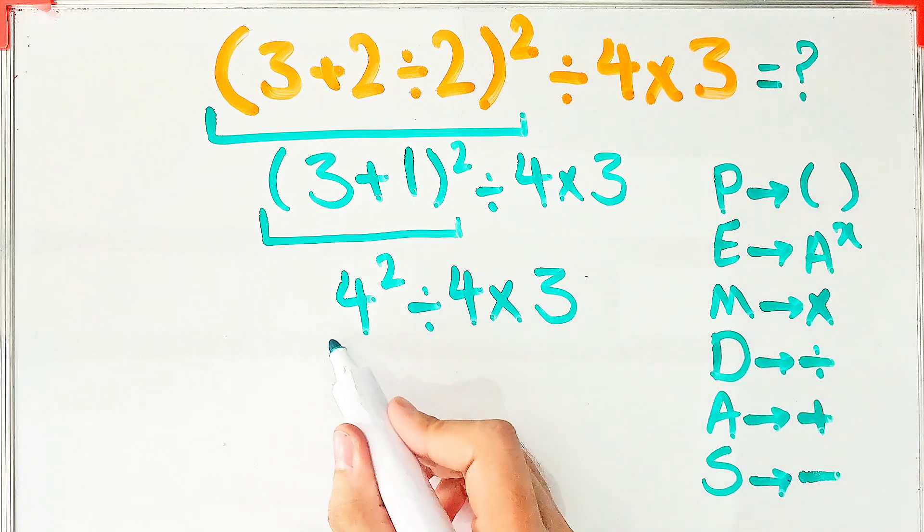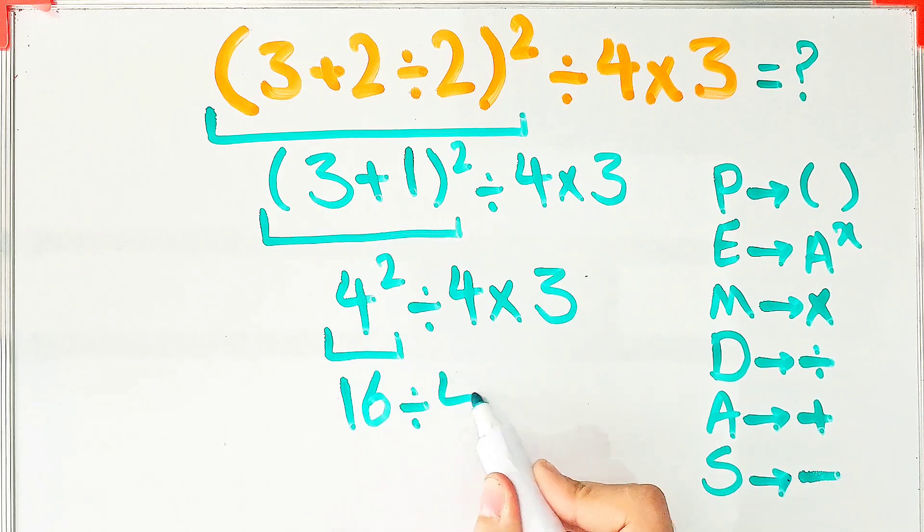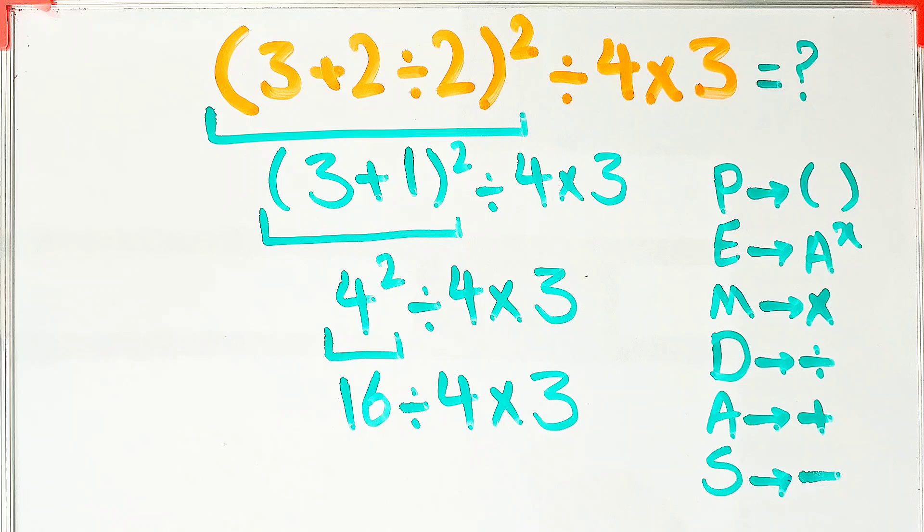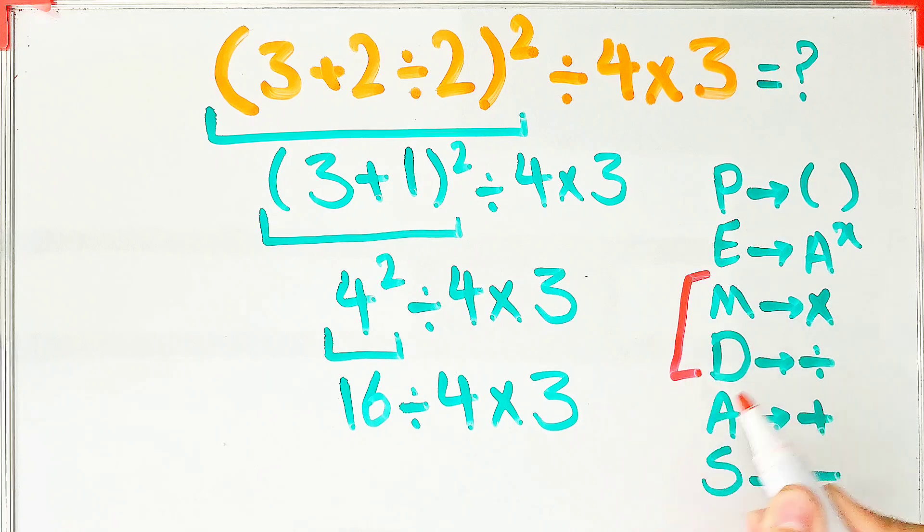16 divided by 4 then times 3. In the new expression we have division and multiplication. Don't forget: multiplication and division have the same level of priority. Also, addition and subtraction have the same priority. When we have both, we start from the left and simplify.